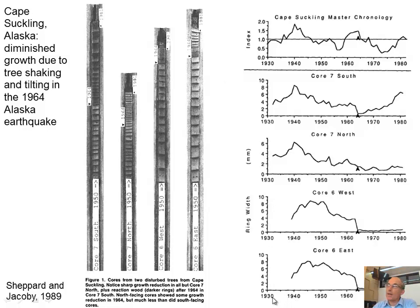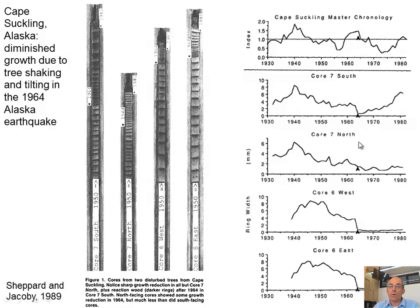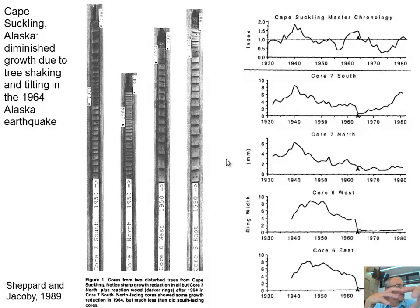These quantify the changes: time versus ring width on the trees, compared against a master chronology showing environmental changes like temperature. These trees were really affected in 1964 by the earthquake. The trees were on a beach and the beach shook so much that the trees were leaned over. They didn't get completely killed, but their roots were affected, and they slowed down their growth for almost 10 years before they recovered.